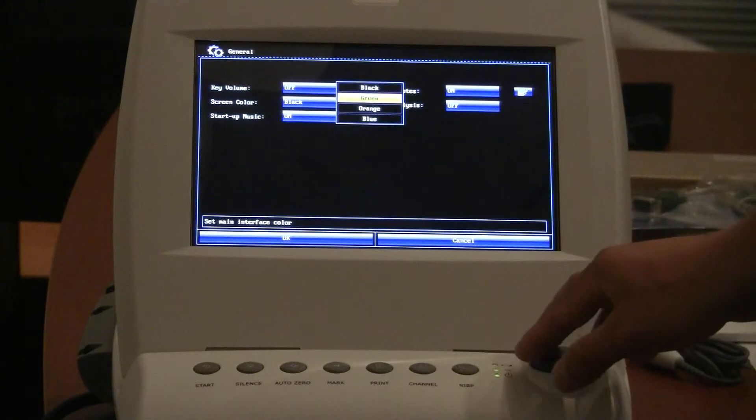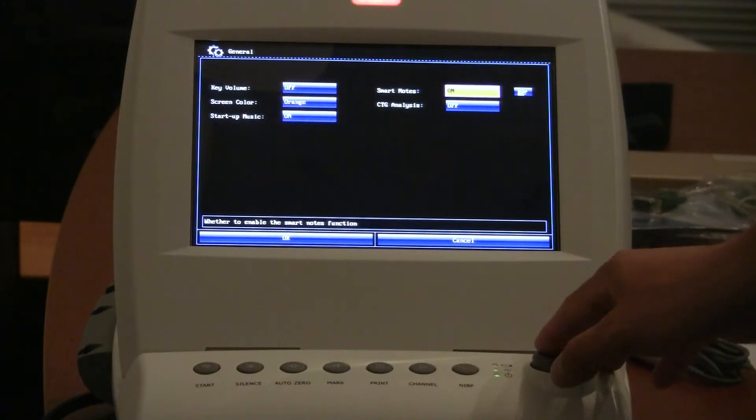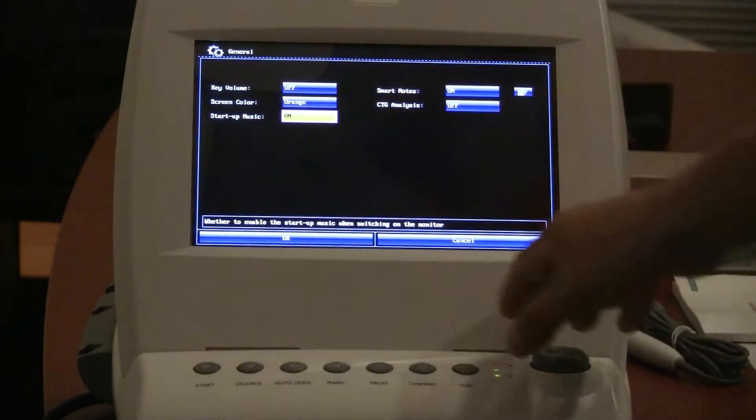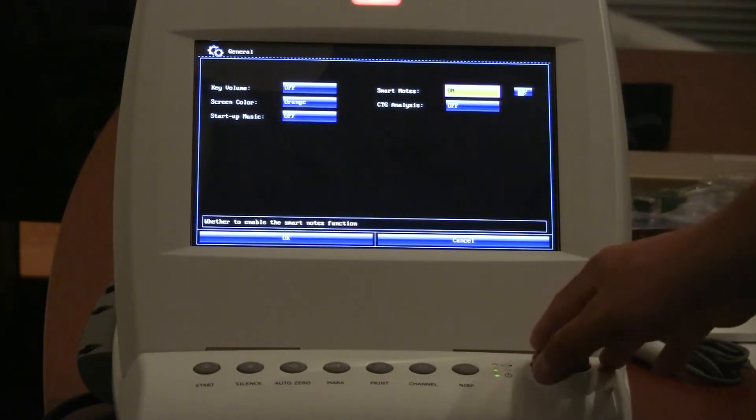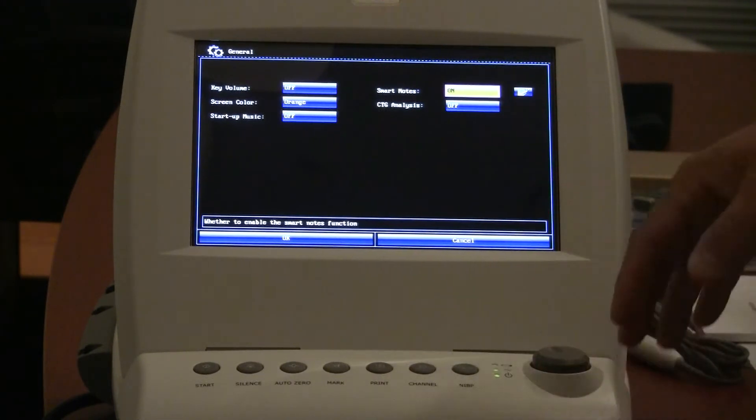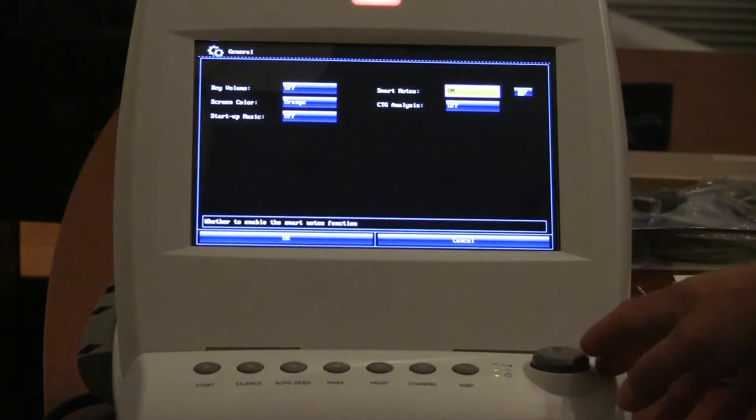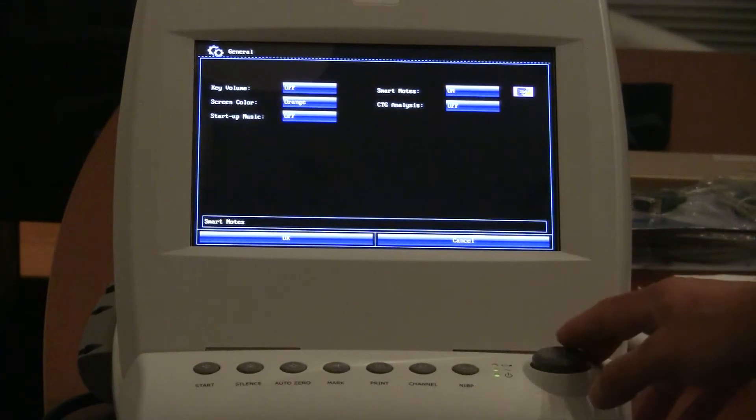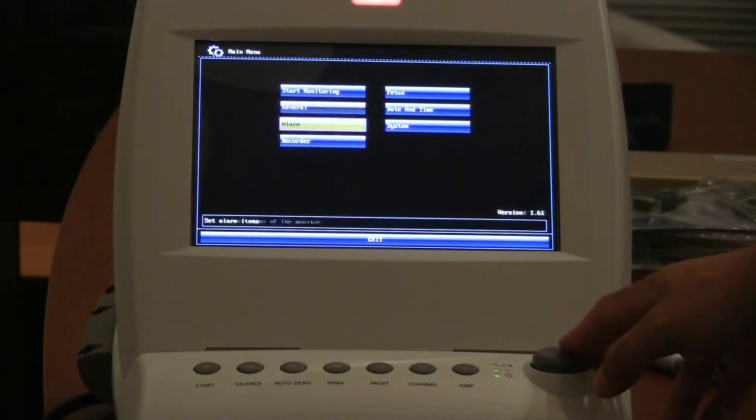When you do change it, you have to hit okay and then go back in. You can change the screen color, the background, from black, green, to orange, to blue. Change it to orange if you like. Startup music: when it reboots, it'll make a funny noise. You can turn that off or on. I prefer to have it off. Smart notes is on, and that will actually allow you to make a note in the system if you see some sort of activity that you want to notate in the document. You can do that. You can turn that on or off here. And your CTG analysis, you can turn that off or on in this menu as well. So we'll leave that on.